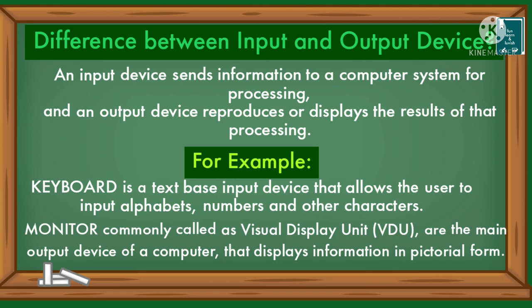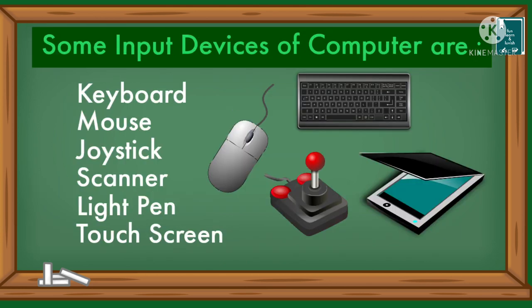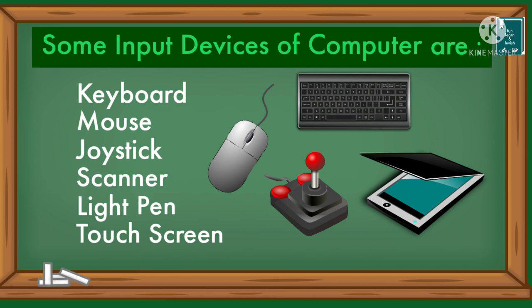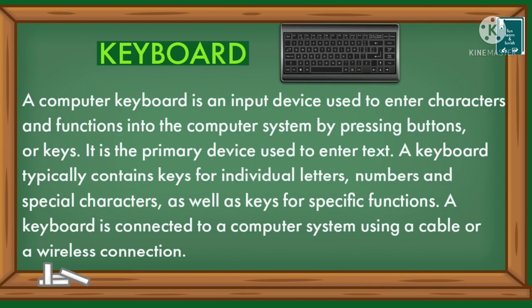Monitor, commonly called VDU, is the main output device of a computer that displays information. Some input devices of a computer are: keyboard, mouse, joystick, scanner, light pen, and touch screen. A computer keyboard is an input device used to enter characters and functions into the computer system by pressing buttons or keys.